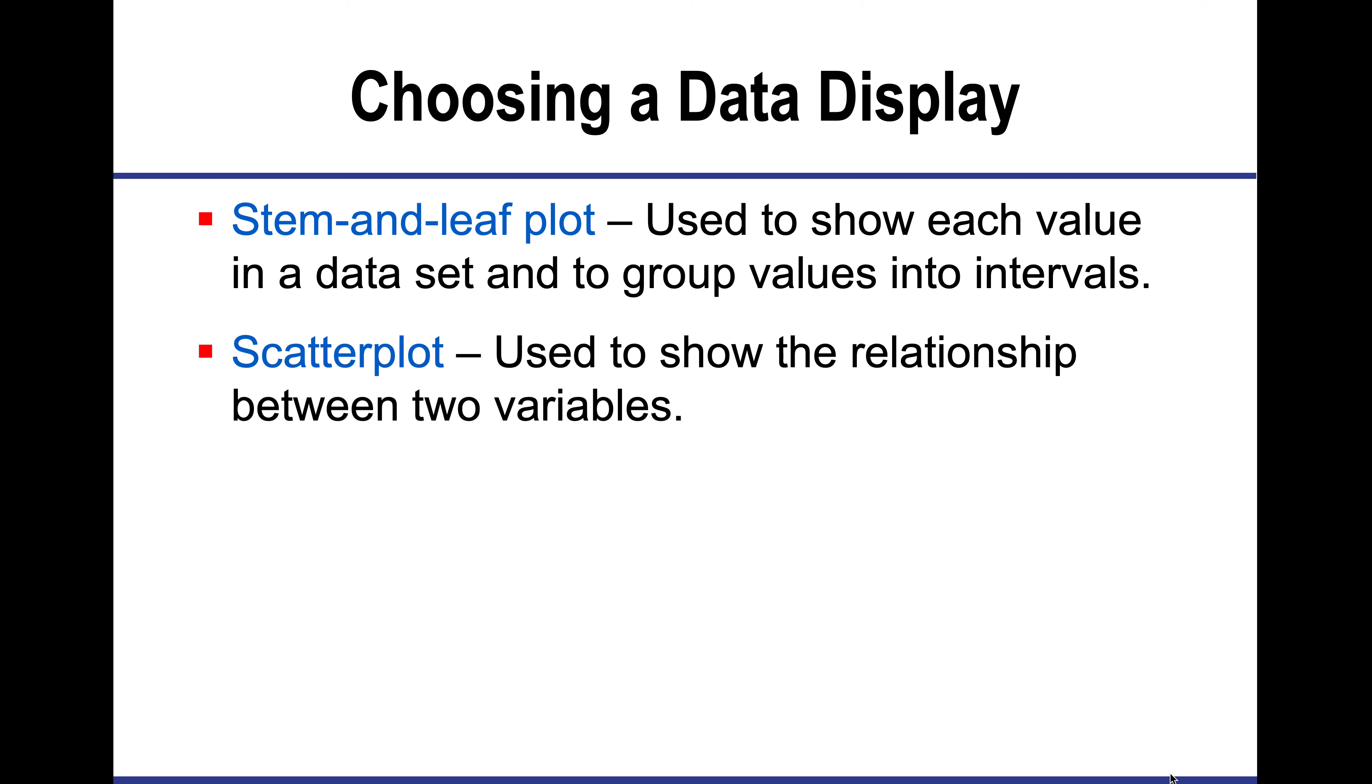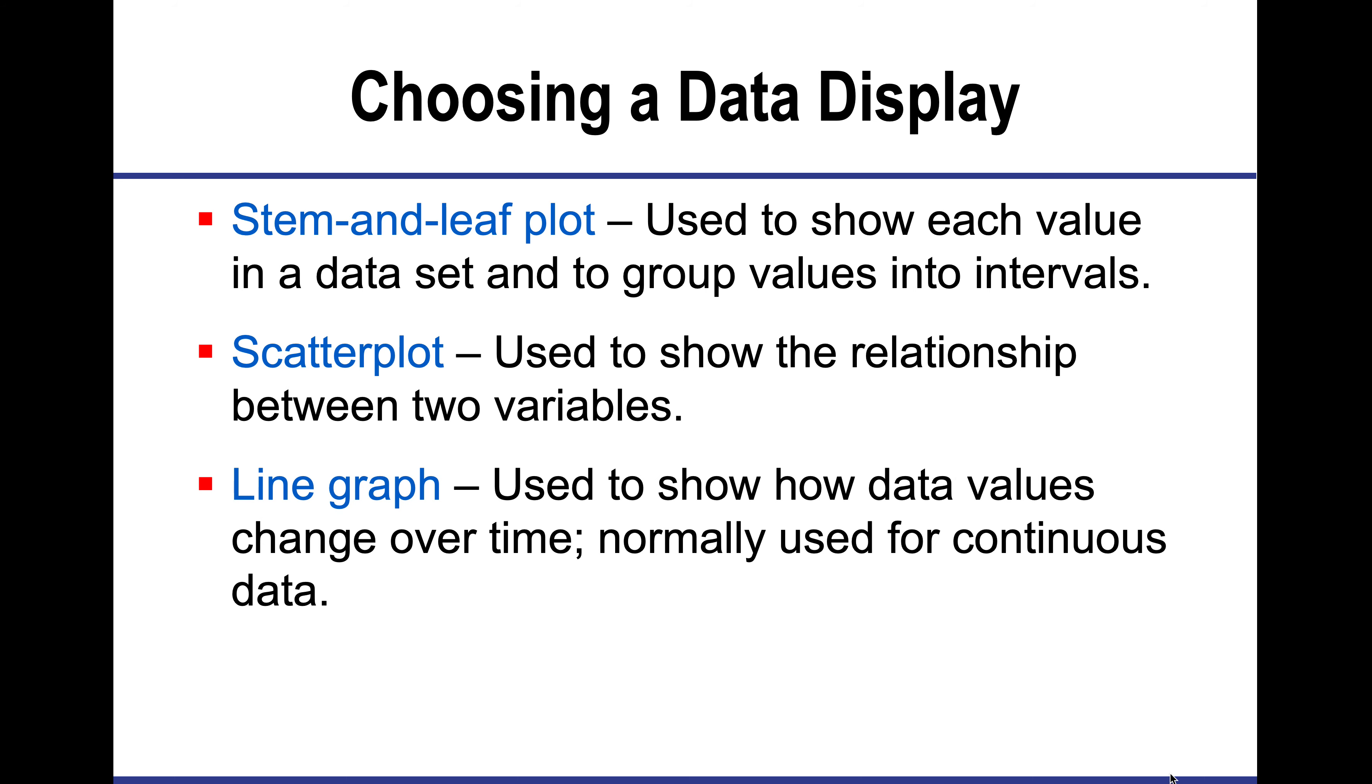A scatter plot is used to show when I have two different variables where one isn't over a period of time. A line graph is going to be used when I have that variable over a period of time. And then a circle graph or a pie chart is going to be used with percentages, parts of a whole.